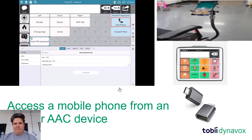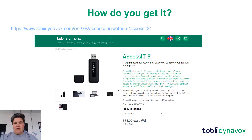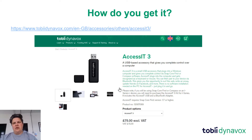So how do you get Access IT? You can go to our website and purchase it directly — it's £75 plus VAT. We'll put a link in the description so you can take a look. That was everything for today; I hope you found this useful, and I look forward to seeing what you do with your Access IT.